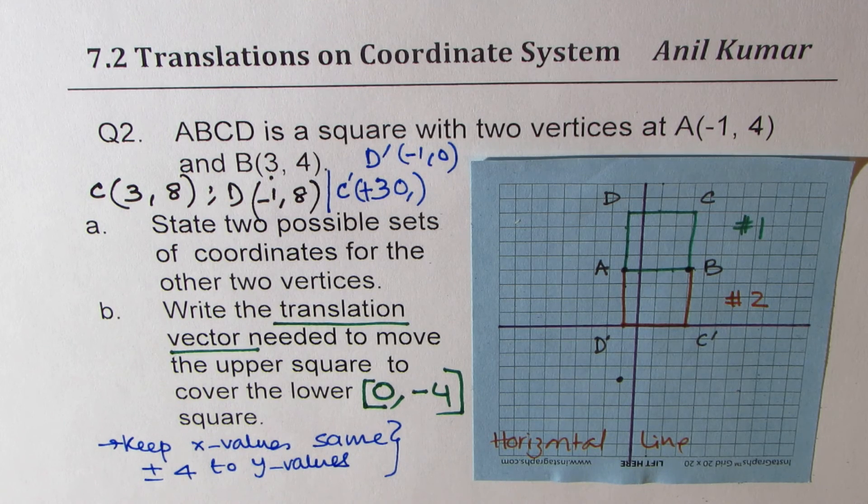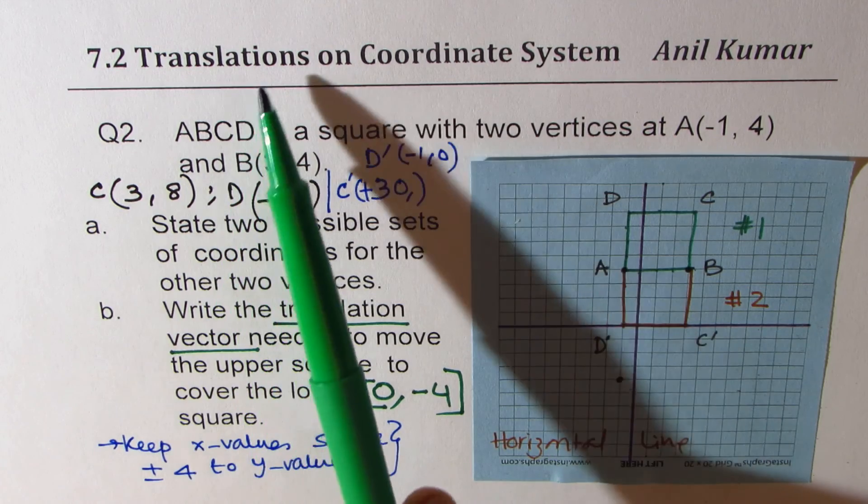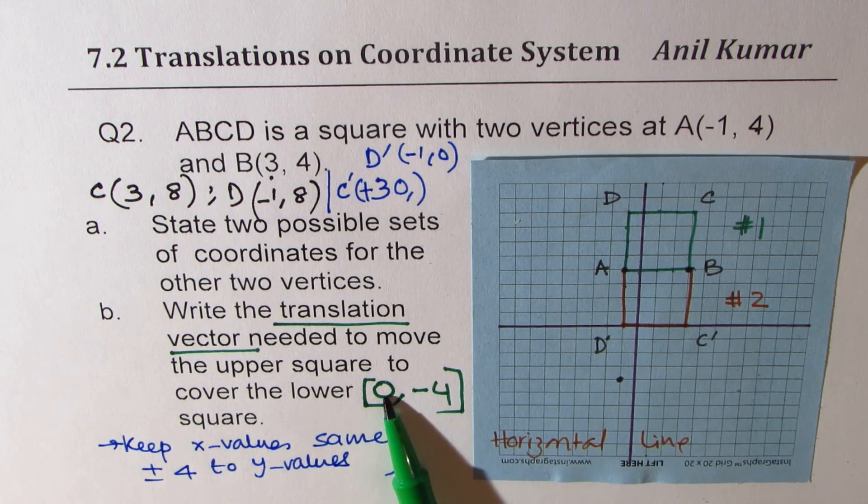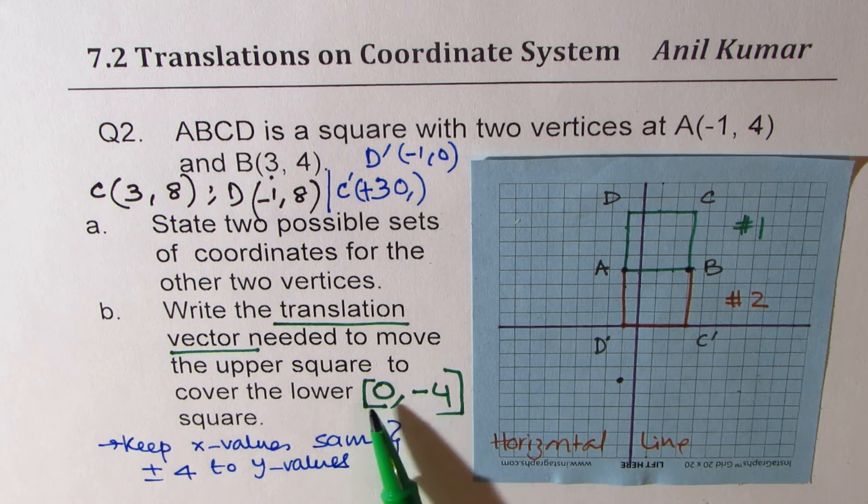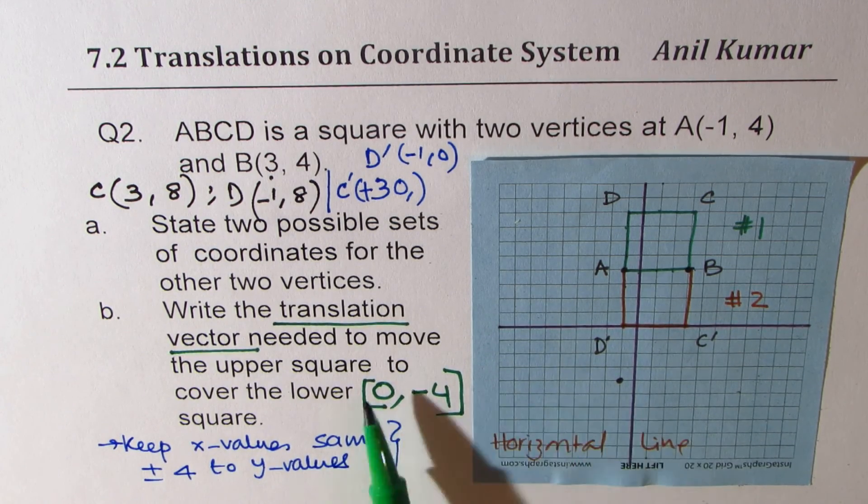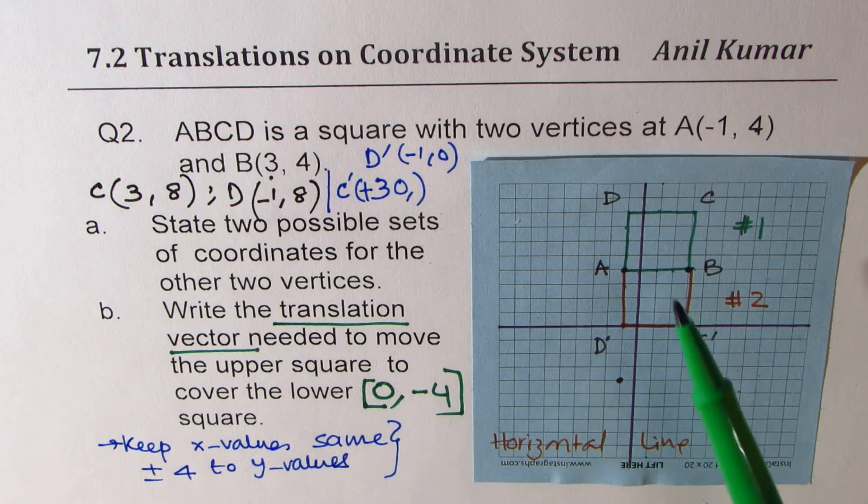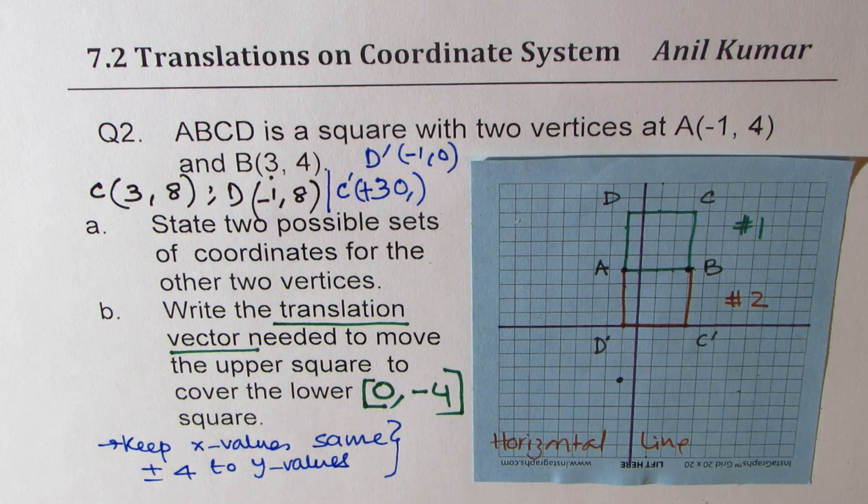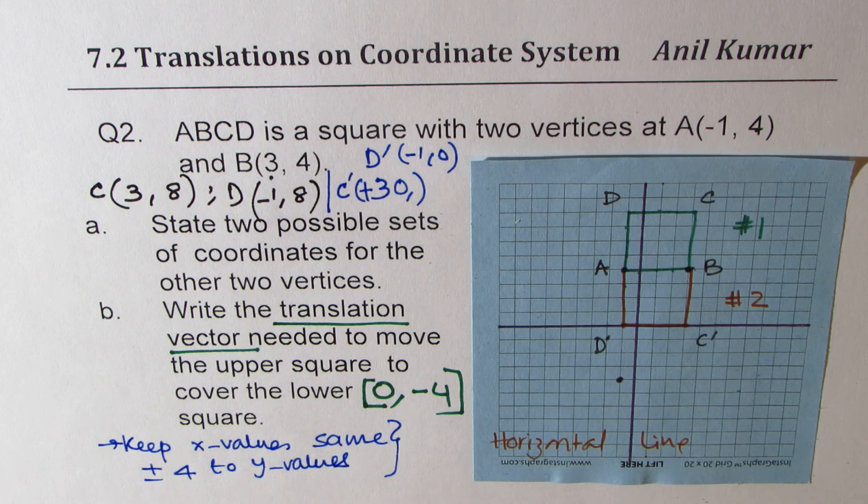So in this video, what we learned is how to describe the translation with the help of the square bracket coordinates. So they tell you the change in X and Y value. So if I write within the square brackets, [0, -4], it means do not move along the horizontal, but come down five units. And if you do that, the top square will overlap the bottom square. So that is how we do translations. I hope all the concepts are absolutely clear. Feel free to write your comments and share your views, and if you like and subscribe to my videos, that'd be great. Thanks for watching and all the best.